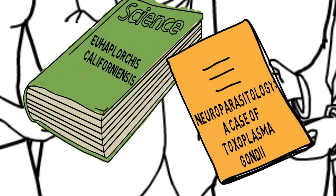Scholarly sources typically use the language — sometimes referred to as the jargon — of a specific discipline. Thus, these sources are not always accessible to everyone.